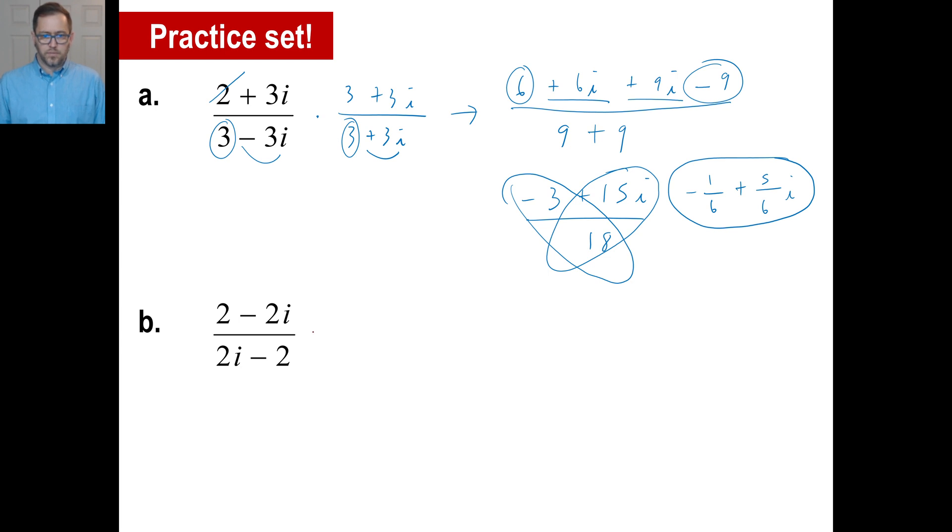Well, you might be able to look at that and immediately tell what the answer is going to be without even working it out, but we'll just go ahead and do it. So the conjugate will be 2i plus 2, and then it's going to be 2i plus 2. Let's take a look. We got 2 times 2i. That's going to be 4i. 2 times 2 is 4. Okay. Done with that.